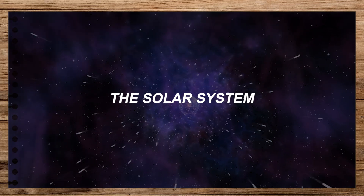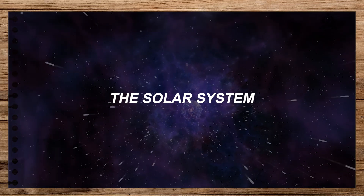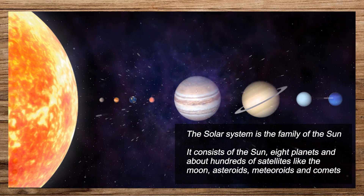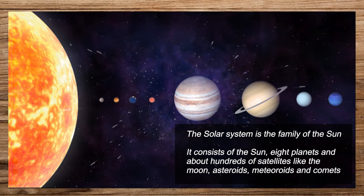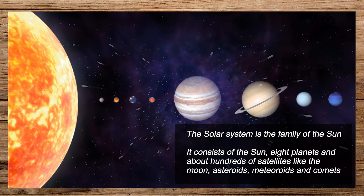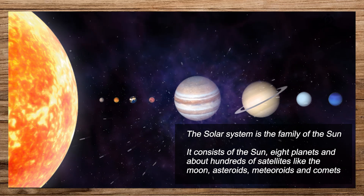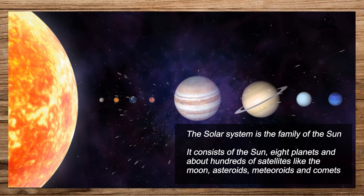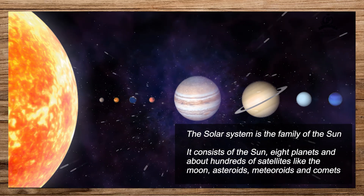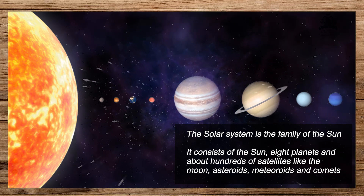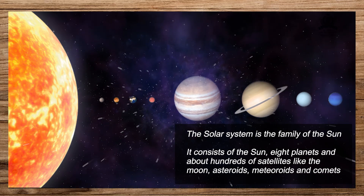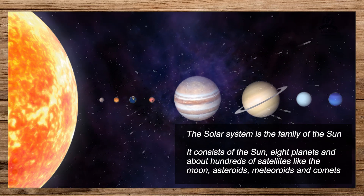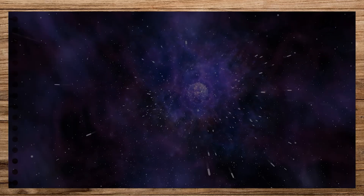The family of the Sun is known as the solar system. It consists of the Sun, eight planets, about 100 known satellites like the moon, and asteroids, meteors, and comets. The solar system is a part of the Milky Way galaxy. It is about 27,000 light years away from the center of the Milky Way galaxy.